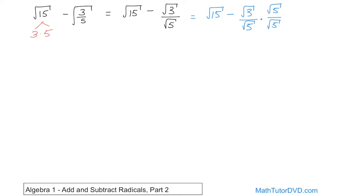On the top, we have two radicals multiplied together, so we multiply the insides: square root of 3 times 5 gives square root of 15. On the bottom, square root of 5 times square root of 5 gives square root of 25, which is just 5. The radical disappears, and that's what we're trying to do. Now the radicals are the same, but we still can't subtract because one is a fraction over 1 and the other has a denominator of 5.